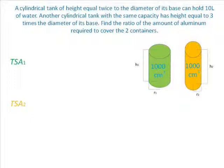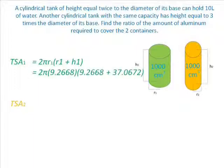Using the total surface area formula for the cylinders, the surface area of cylindrical tank 1 is equal to 2 pi R1 times (R1 plus H1), which is equal to 2 pi times 9.26 times (9.26 plus 37.06), that will now give us an answer of 2697.8 cm squared.